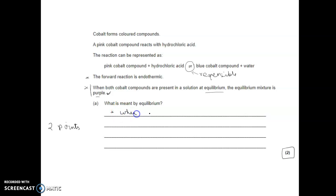What is meant by the term equilibrium? Equilibrium is established when the rate of forward reaction is equal to the rate of backward reaction. As soon as you mention that, you've got one point done.